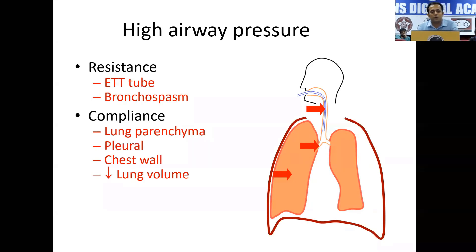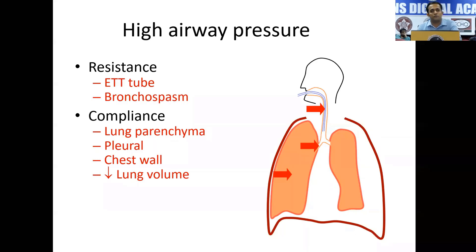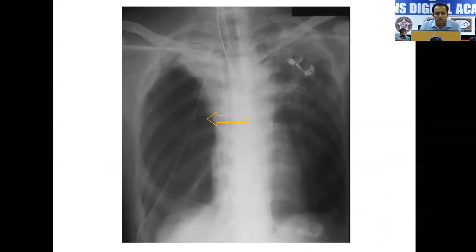The upper arrow reflects the resistance problem — it can be because of an endotracheal tube which is blocked or kinked, or else it can be bronchospasm. Or it can be a compliance problem wherein the lung parenchyma itself is very stiff — like in most cases of pneumonia — or there can be chest wall problem, or a decrease in lung volume because of external compression like a pneumothorax.